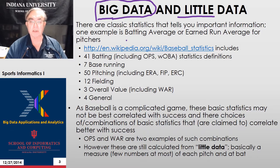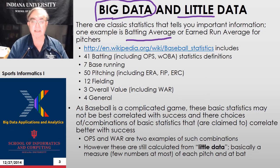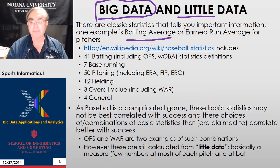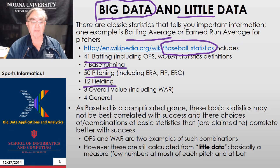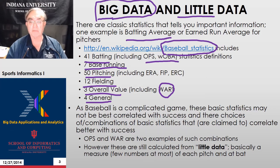If you listen to baseball, it's full of statistics like batting averages — X, Y, and Z is hitting .321, an average number of hits per bat. There are lots and lots of such statistics. If you go to Wikipedia on baseball statistics, you will find 41 batting statistics, seven for base running, 50 for pitching, 12 for fielding, and three overall, which includes the wins above replacement measure we'll come to later. We've given some examples here: OPS, OBA, ERA, FIP, and ERC.